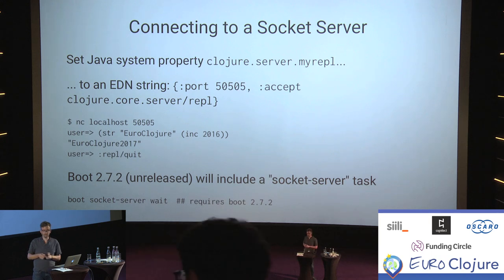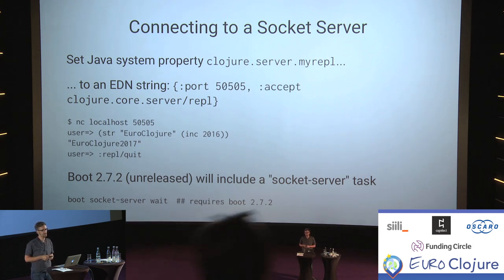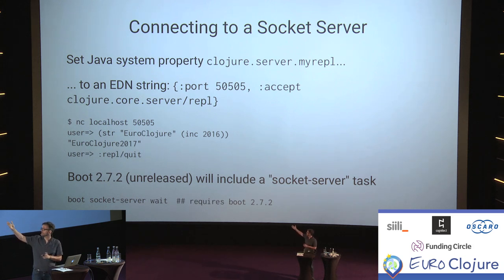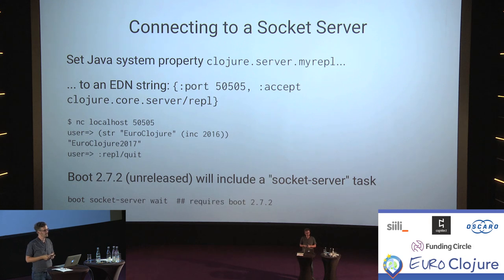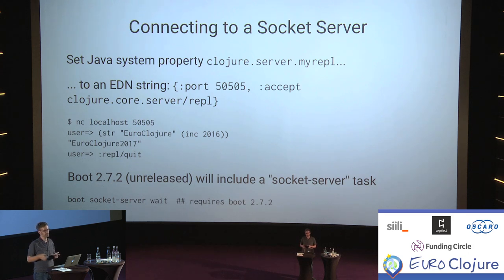The next thing you need to do is set up your Clojure process to accept connections in the form of a socket server. That's a feature introduced in Clojure 1.8, and it's simple to enable — just set a Java system property called clojure.server.something to an EDN string. Once you do that, you can netcat or telnet into the process. The next version of Boot will have a task that makes this even easier: just type boot socket-server and it will automatically start a socket server in the background.